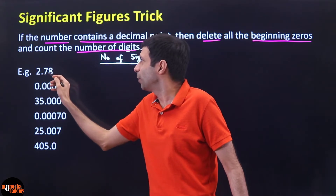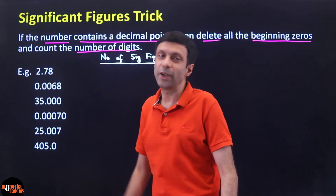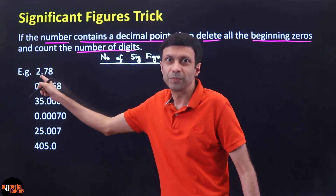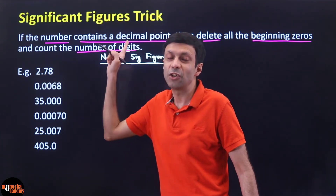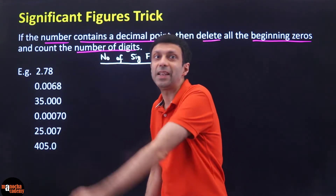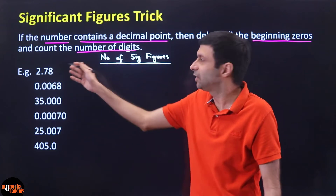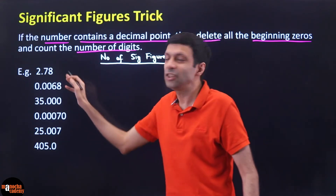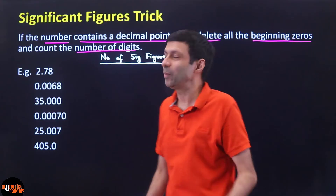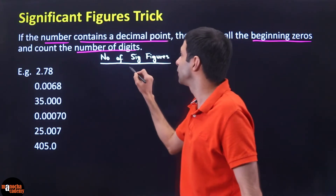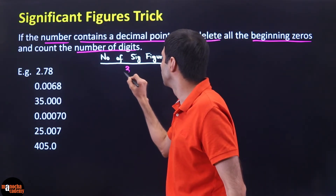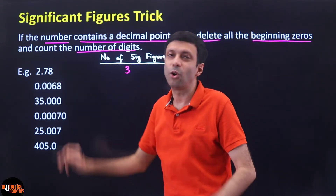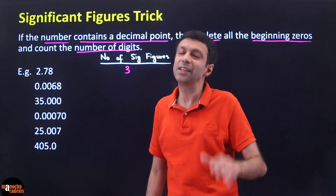The first example is 2.78. This number has a decimal point after the 2. The rule says delete all the beginning zeros — but there are no zeros in the beginning. So all three digits are significant, meaning the number of significant figures is 3.